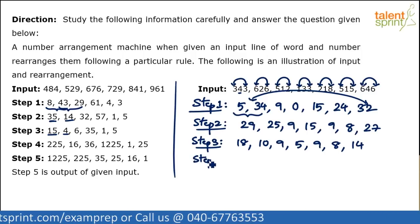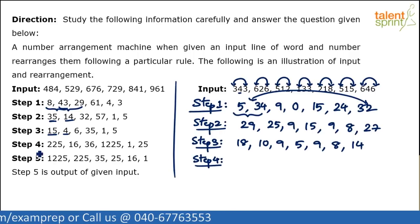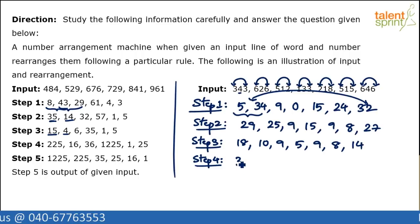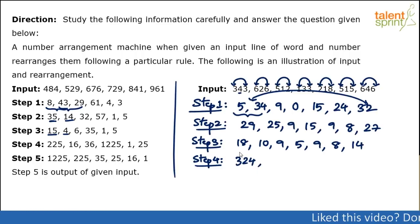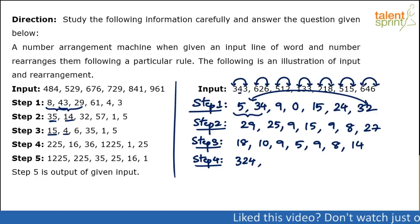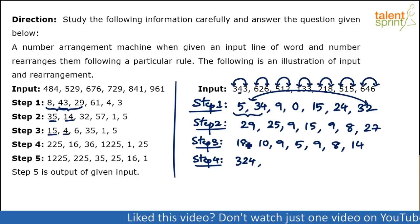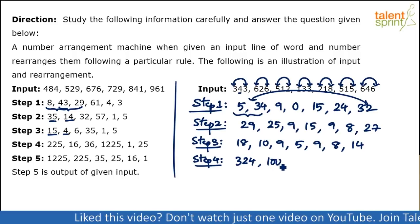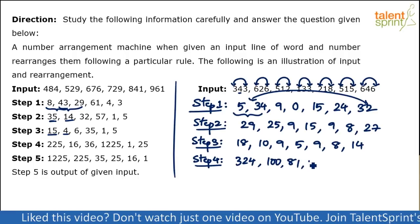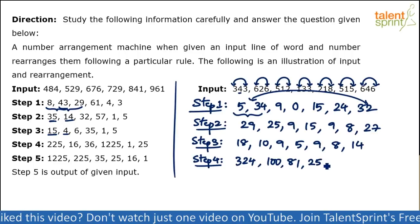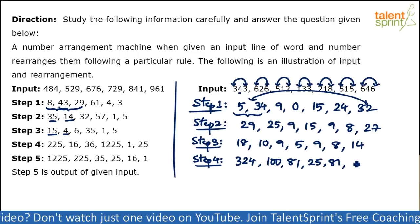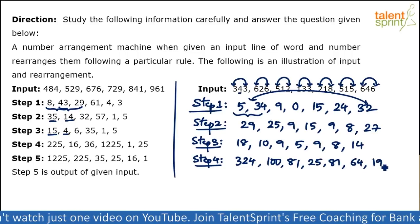For step 4, we take the squares of the numbers from step 3. Remember you should know squares up to 30 by heart. 18² = 324. 10² = 100. 9² = 81. 5² = 25. 9² = 81 again. 8² = 64. And 14² = 196. So step 4 gives: 324, 100, 81, 25, 81, 64, 196.